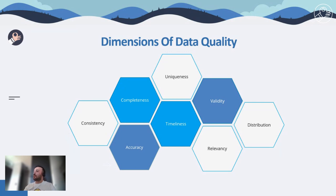The second additional dimension is distribution. Value distribution doesn't represent directly the quality of datasets. However, due to the nature of the AI modeling approach, models are supposed to be regenerated with fresh data. Hence, it must be checked whether the statistics of new datasets still align with the statistics from previous training datasets.